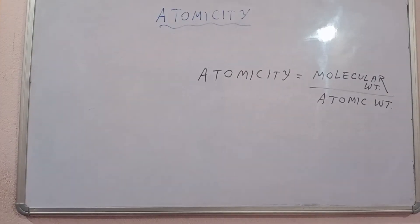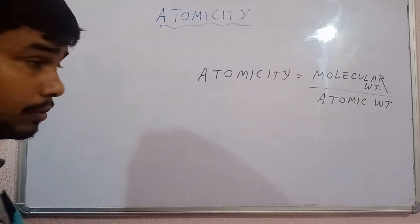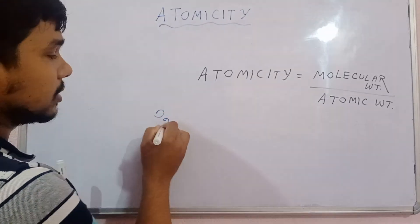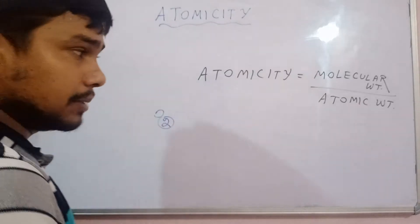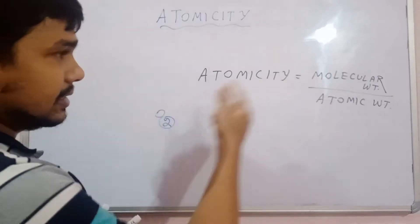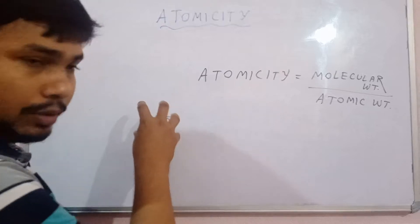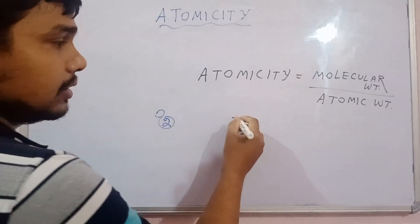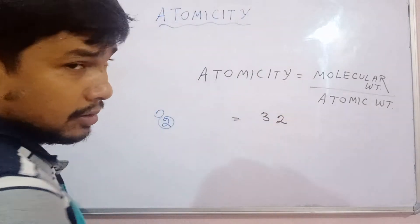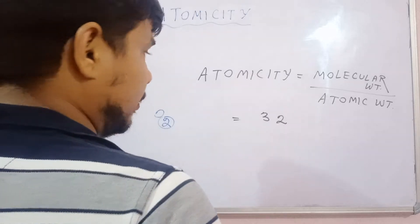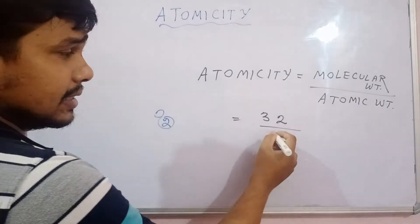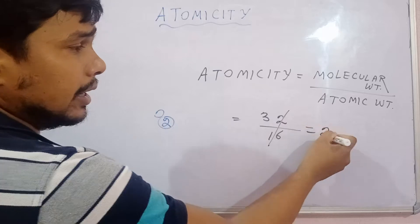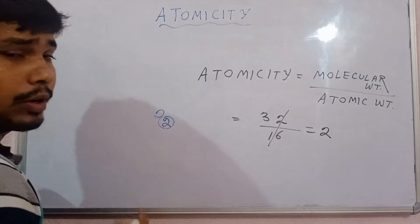How is this formula applied? Suppose I have O2. The atomicity is 2. The molecular weight of O2 is 32. The atomic weight of oxygen is only 16. So 32 divided by 16 equals 2 — that is the atomicity.